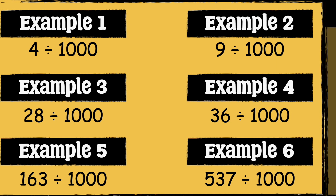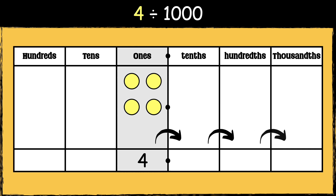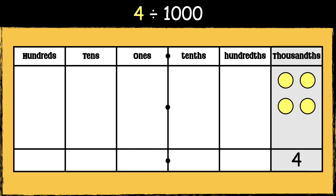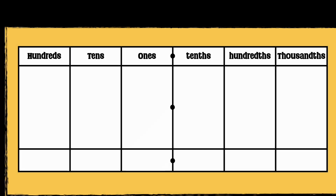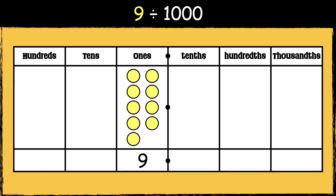Here's the first example: four divided by a thousand. When we divide numbers by a thousand, the digits move three places to the right, so four becomes four thousandths. We need to use zeros as placeholders to show that there are no ones, tenths, or hundredths, so the answer is zero point zero zero four.